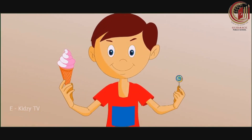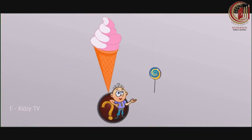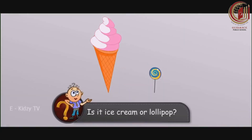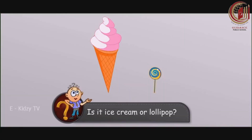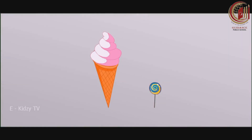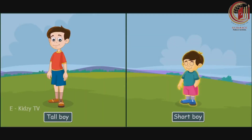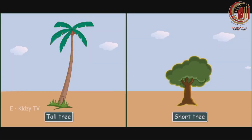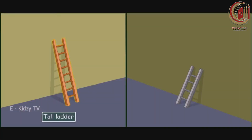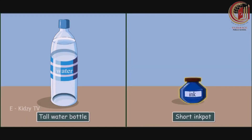Look at Raju — he has an ice cream and a lollipop. Can you see which one is tall? Is it the ice cream or the lollipop? The ice cream is taller than the lollipop. Let's see more examples: tall building and short house, tall boy and short boy, tall tree and short tree, tall ladder and short ladder, tall water bottle and short ink pot.